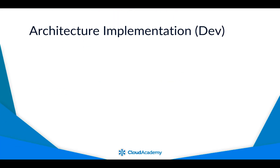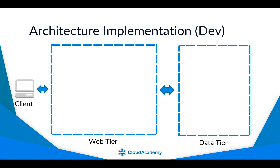There are many ways to implement the application's two-tier architecture, each with pros and cons. Because this is a course on Terraform and not GCP, I won't focus too much on the architecture implementation details. The implementation chosen could be used for real applications and includes a few GCP services, so you can see more resources if you inspect the Terraform configuration files.